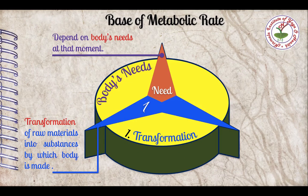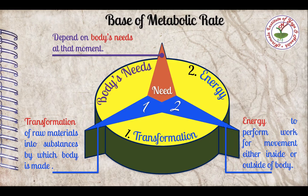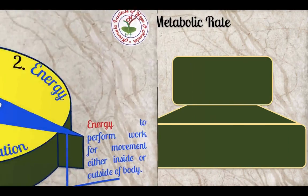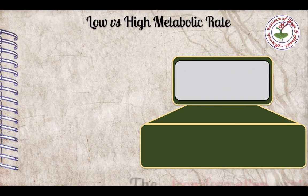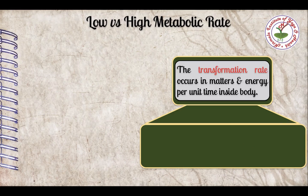What are the needs of our body? First is the transformation of raw materials into substances by which the body is made. Continuously, growth and maintenance of the body parts is going on in the body, and whatever is required is supplied by metabolism — that requirement is determined by the body. The second major need is energy — energy to perform work, for any movement or activity either inside or outside of the body. The transformation rate between matter and energy per unit time inside the body is termed as metabolic rate.